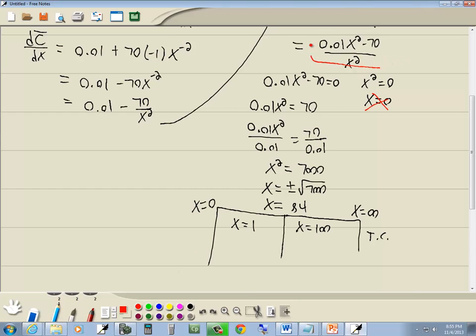Now here's our derivative here. I don't need to worry about the bottom part because the bottom part is x squared. Well, when you square something, it's always positive, so we'll just plug in the top part. So I've got 0.01 times 1 squared minus 70 and 0.01 times 100 squared minus 70. Well, 1 squared is 1 times 0.01 is 0.01 minus 70 is negative, so it's decreasing.